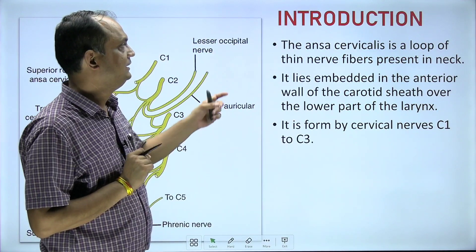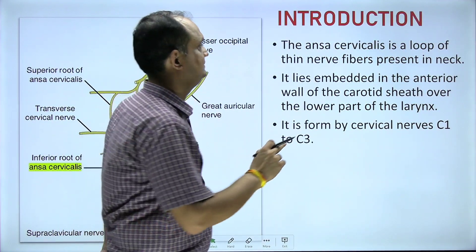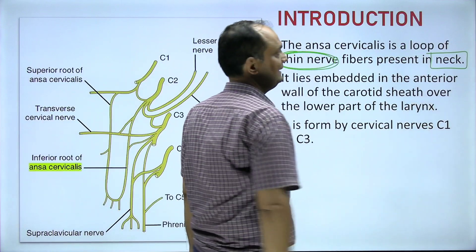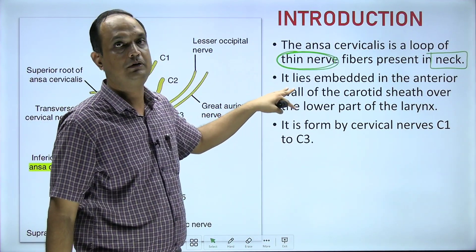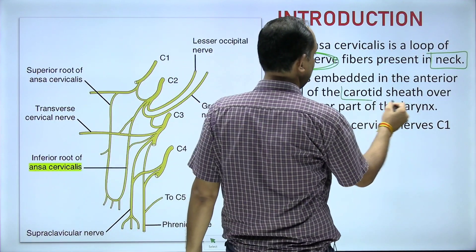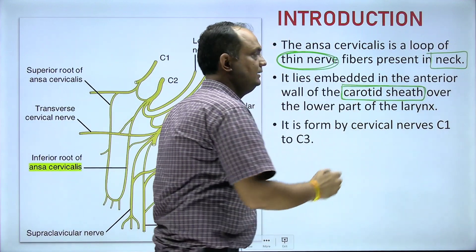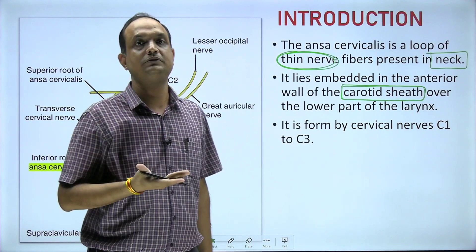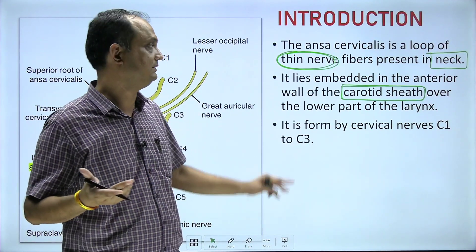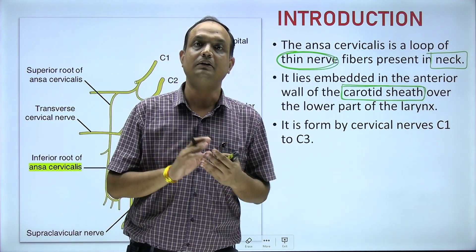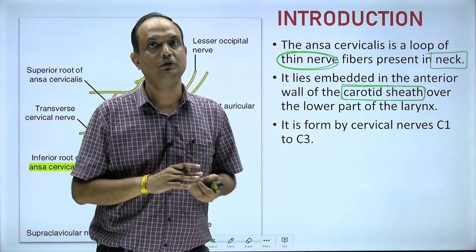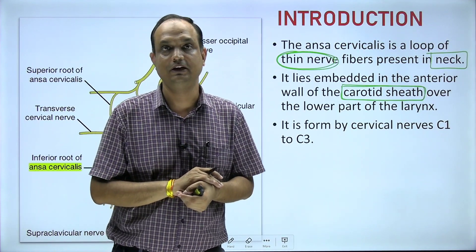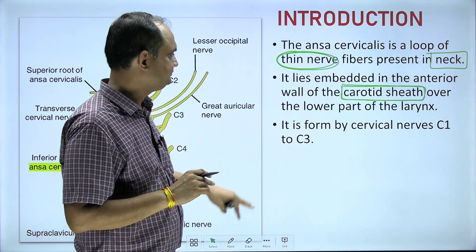The ansa cervicalis is a loop of thin nerve fibers present in the neck. These thin nerve fibers are embedded in the anterior wall of the carotid sheath. The carotid sheath is part of the deep fascia of the neck — a tubular sheath on the right and left side. The anterior wall of this tubular sheath is related to the ansa cervicalis. This carotid sheath encloses the internal jugular vein and common carotid artery, so ansa cervicalis is in relation with the anterior wall of these vessels.